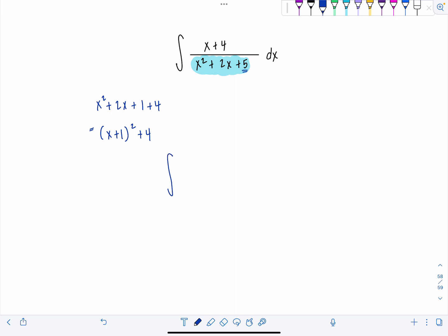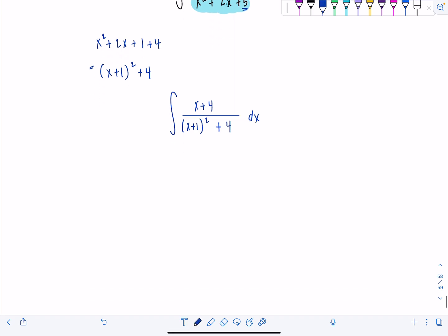So now we have integral, still x plus 4 up here. And then x plus 1 squared plus 4 dx. I'm going to split this up into two integrals. That's looking ugly. Let's make it cuter. And I really want to just treat this as my new variable quantity. I'm looking to do a u substitution.